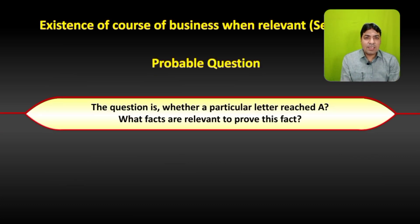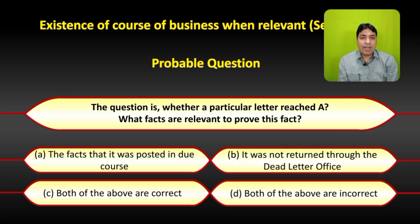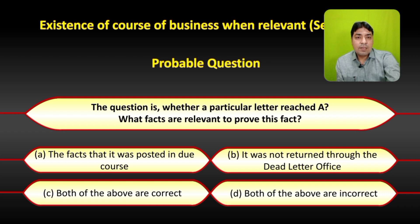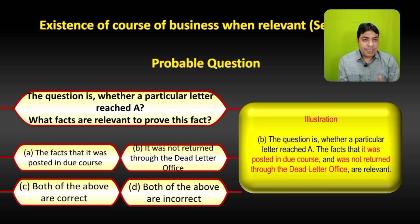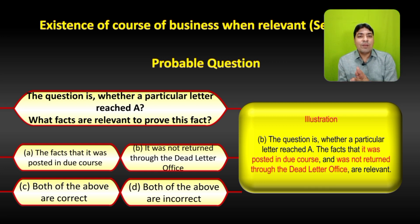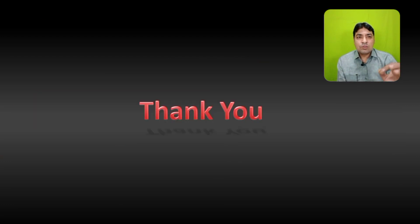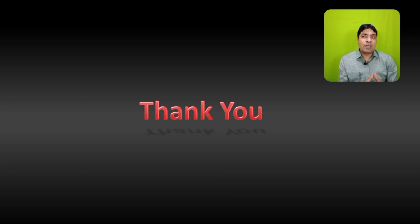The probable exam question on Section 16: 'The question is whether a particular letter reached A — what facts are relevant to prove this?' Options: (a) the fact that it was posted in due course, (b) it was not returned through the dead letter office, (c) both of the above are correct, (d) both of the above are incorrect. We already discussed that both facts are relevant under Section 16. So the correct answer is C — both of the above are correct. These are Sections 15 and 16 of the Indian Evidence Act. I hope you understood this topic. Please subscribe to my channel, hit the notification button, hit the like button, and share this video with your friends. Thank you very much.